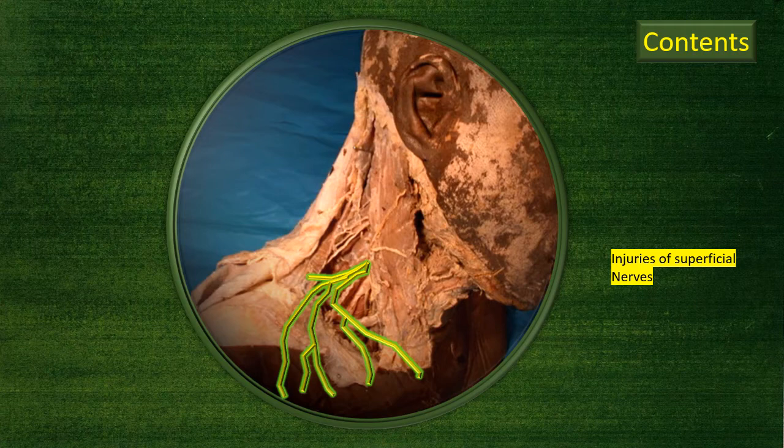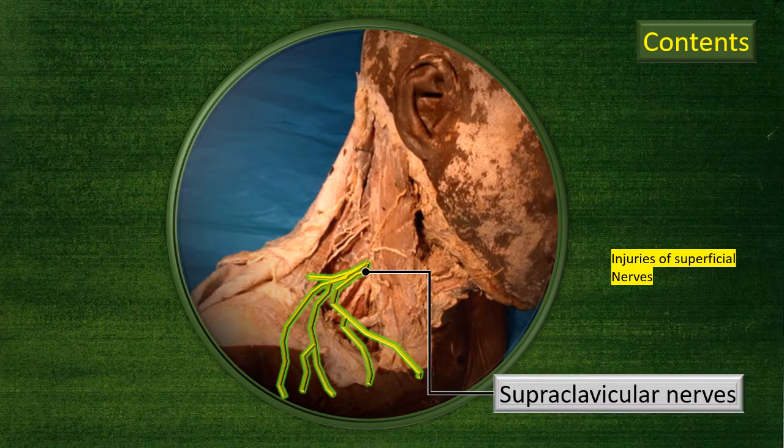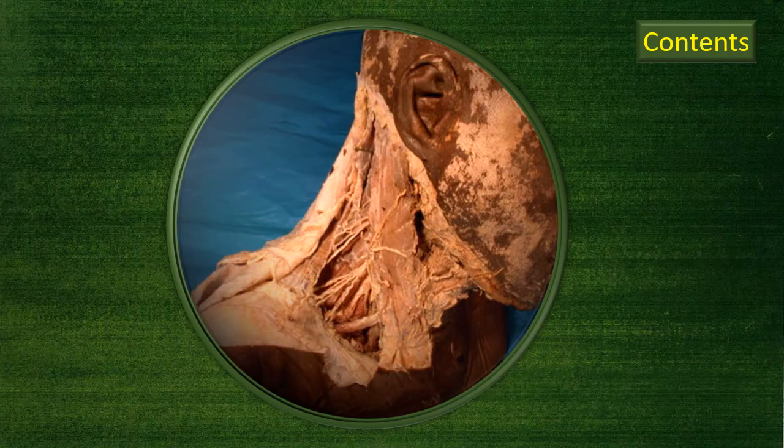The supraclavicular nerves descend and divide into lateral, intermediate, and medial groups of fibers, which can be traced across the clavicle into the pectoral skin roughly up to the level of the angle of the second rib. Being superficial nerves, any injury to the skin is likely to cut one or more of them, resulting in sensory loss to the corresponding skin area.